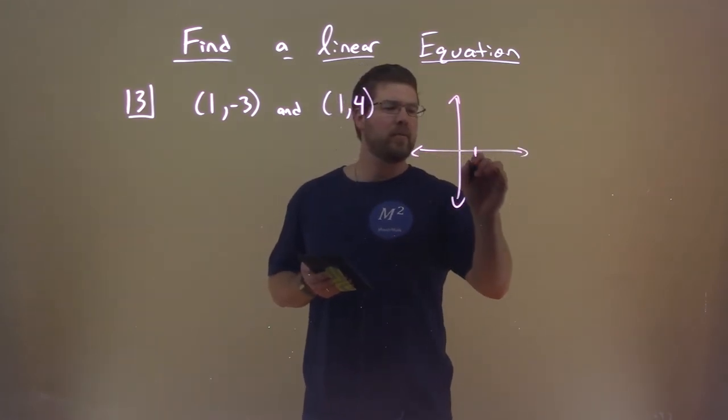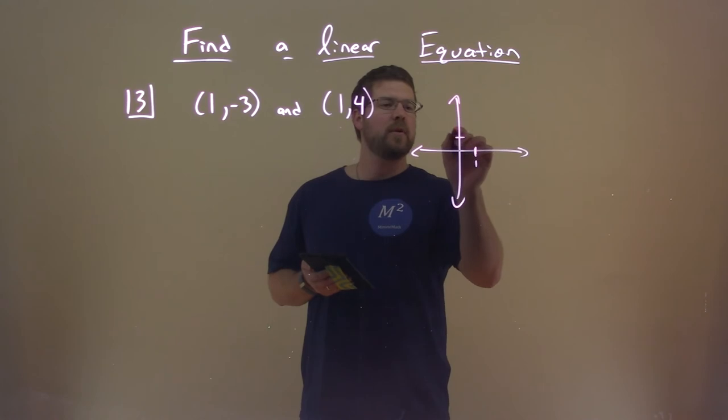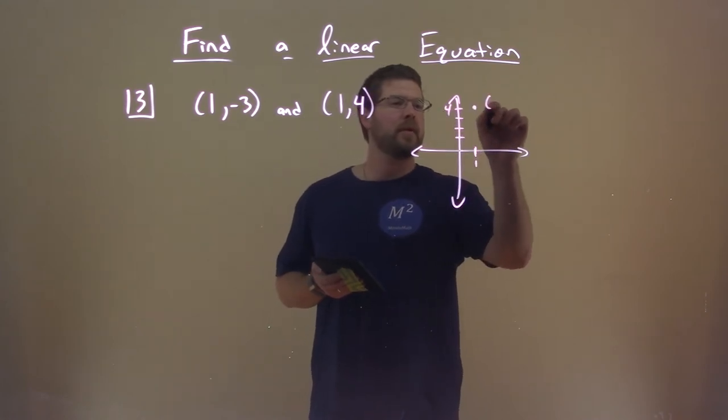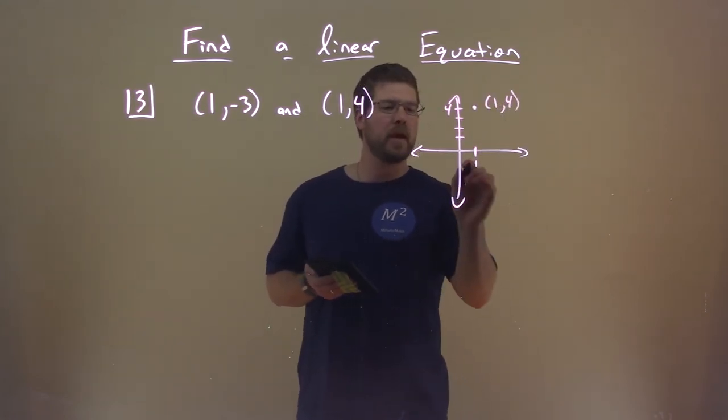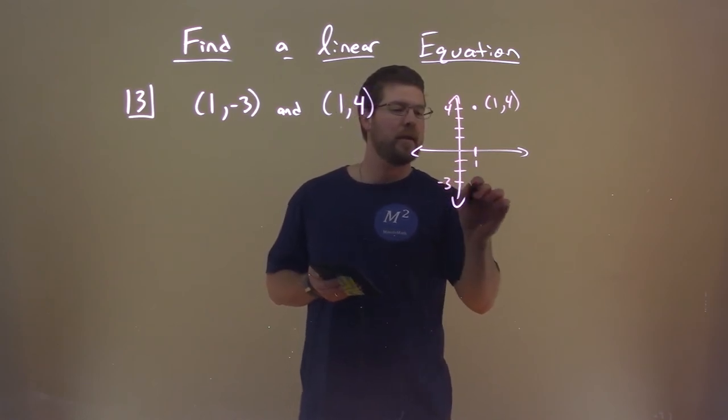And if 1's right here, so that's where 1 is, and we have a positive 1, 2, 3, 4, that's a point. (1, 4) right here. And the other one is (1, -3). 1, 2, 3. We have minus 3 down here. And that's the point.